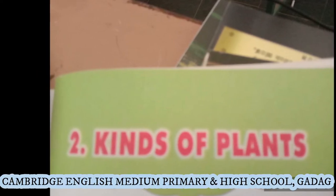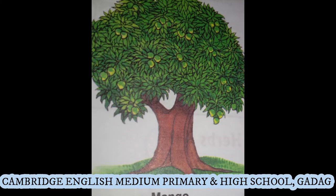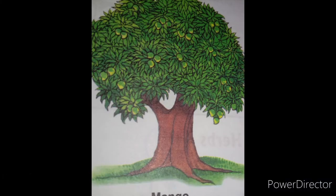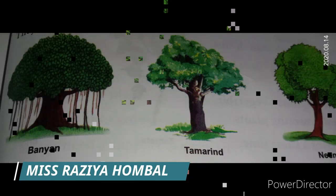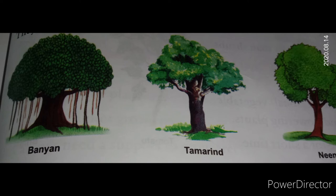First, we'll study about trees. Big, tall plants are called trees. Many trees have branches, and trees have a hard and woody stem called a trunk. Examples: mango, neem, banyan, tamarind, coconut, and palm are called trees. Some trees, like coconut and palm, are without branches. They live for many years.